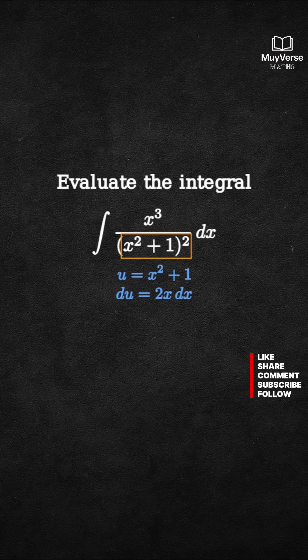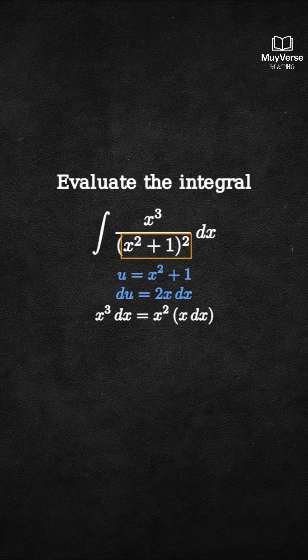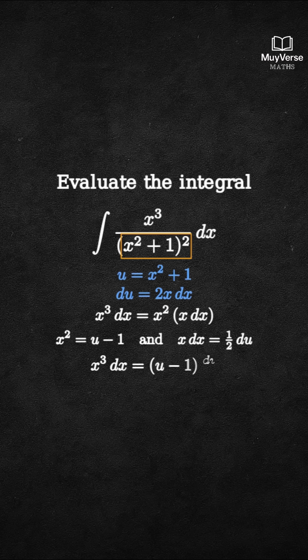Next, we rewrite the numerator to include the piece x dx. x cubed dx equals x squared times x dx. But x squared is u minus 1, and x dx is 1 half du. Therefore, x cubed dx equals (u minus 1) times du over 2.